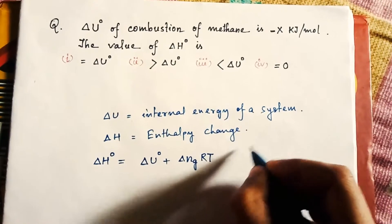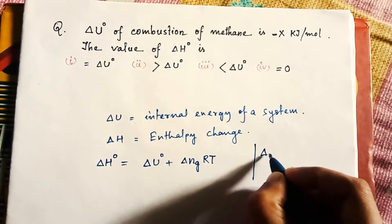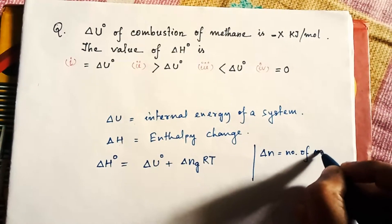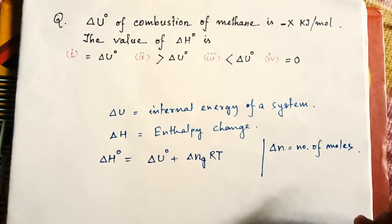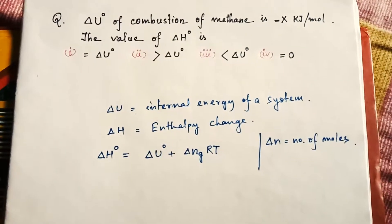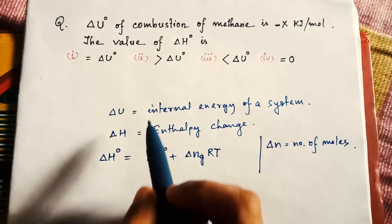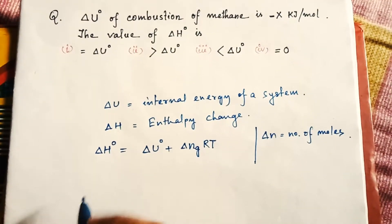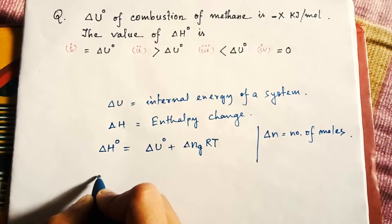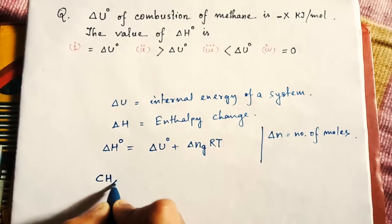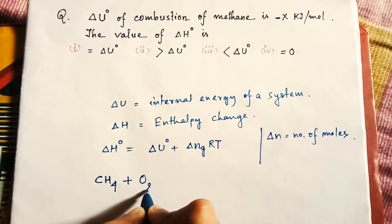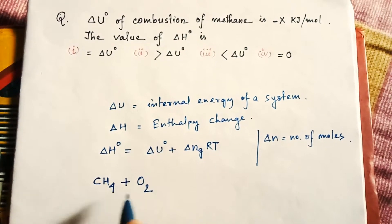So here we can write Δn = number of moles. Now in this question it is mentioned that the combustion of methane, that means the reaction will be methane CH₄, combustion that means you need oxygen, CH₄ + O₂ → CO₂ + H₂O.